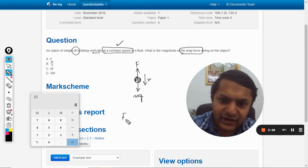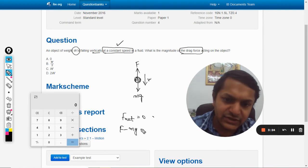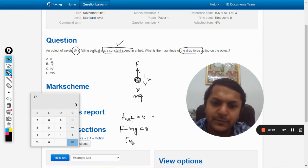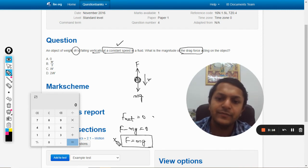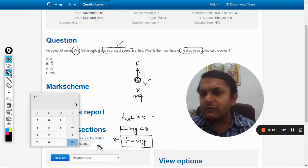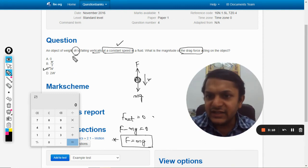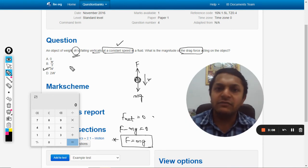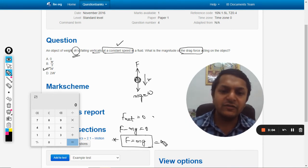So it means F_net is equal to zero. F minus mg is equal to zero. F is equal to mg. So this is straightforward. The force will be equal to the weight W. And it is given that the weight is W, the mass is not given, so this mg is equal to W. So F is equal to W.